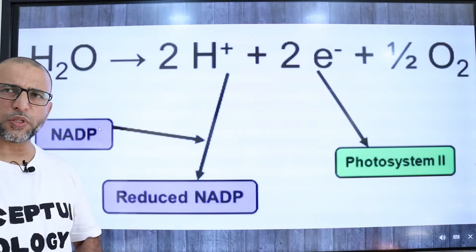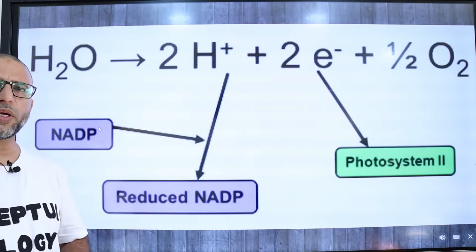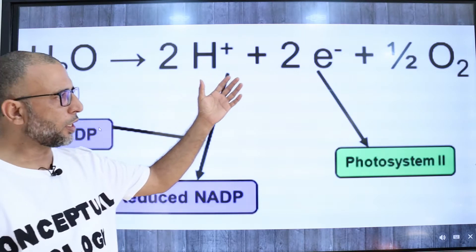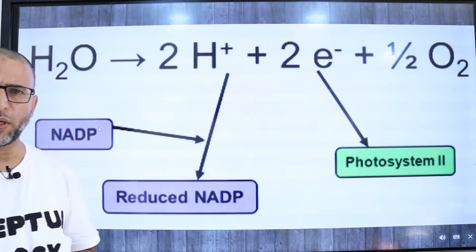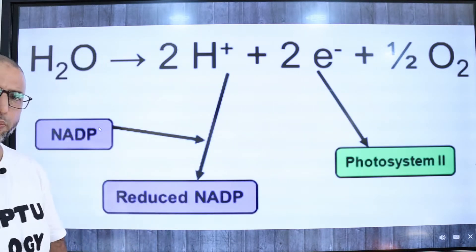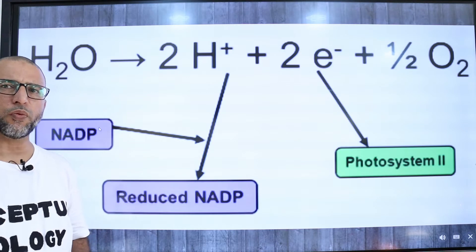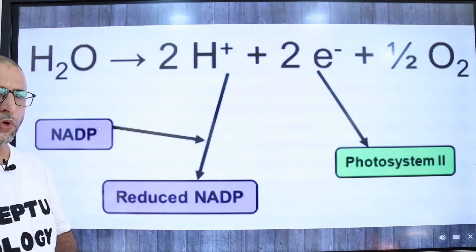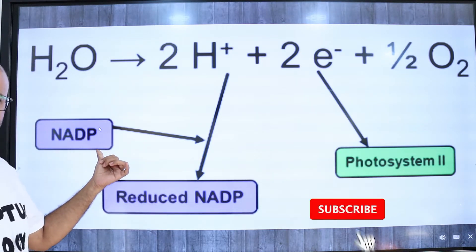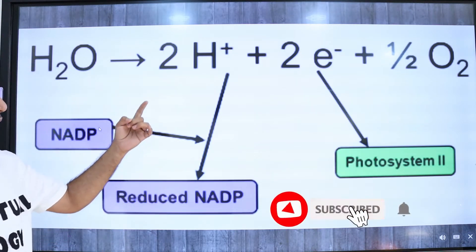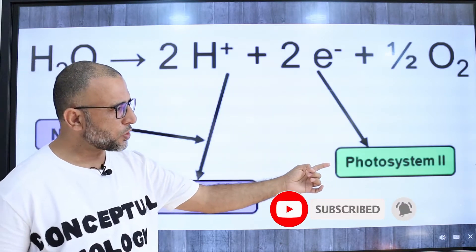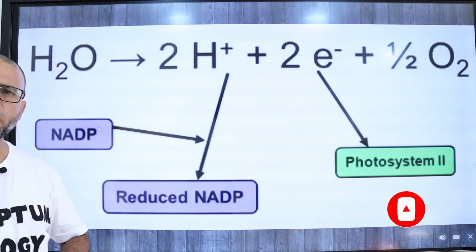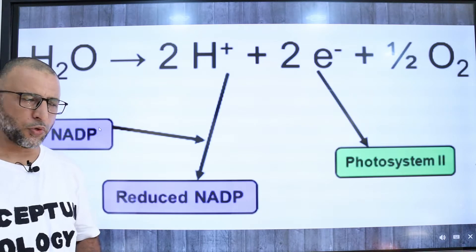Photolysis is the splitting of water molecules in the presence of light into protons, electrons, and oxygen. It takes place during non-cyclic photophosphorylation. Protons are used to reduce NADP, electrons are donated to photosystem II, and oxygen is released as a waste product.